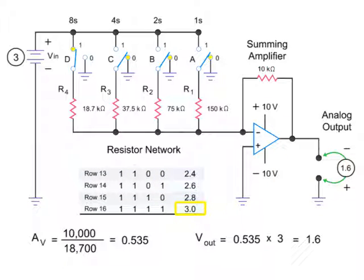Finally, we can generate an output of 3 volts by inputting binary code 1111.